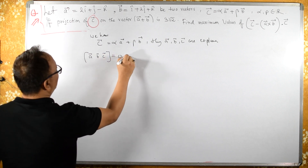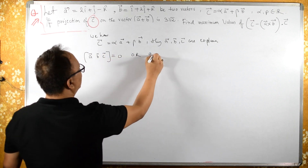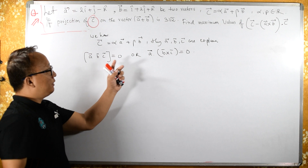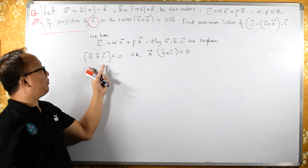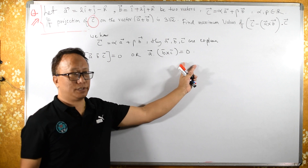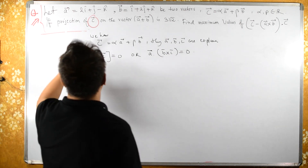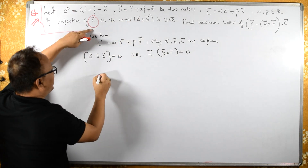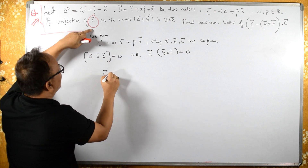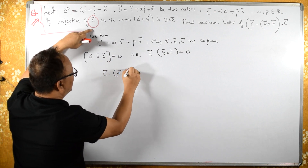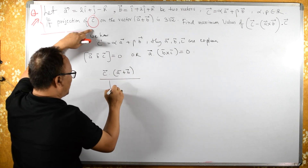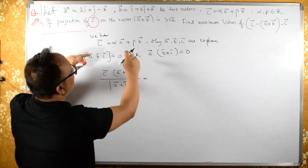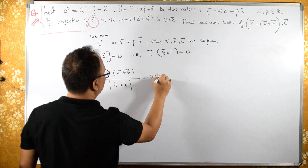Coplanar means the box product of a, b, c is equal to 0, or a dot (b cross c) equals 0. So a, b, c are coplanar, which means this equals 0. Now it is given that the projection of c on the vector (a plus b) is equal to 3√2.